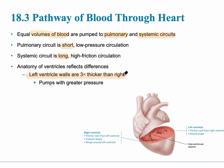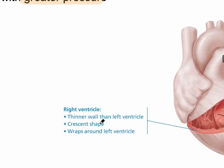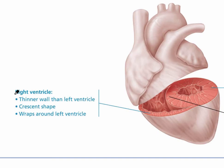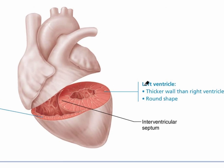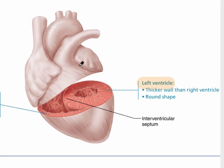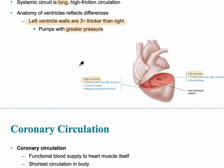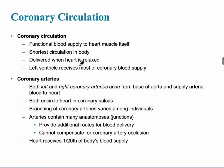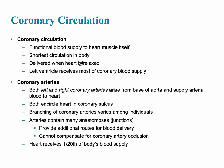The left ventricular wall generates much greater pressure. On the right side, in the right ventricle, the pressure is only about 20 millimeters of mercury, which is significantly less than the left side where pressure is at least 120 millimeters of mercury. We've talked about pulmonary circulation and systemic circulation; we haven't yet talked about coronary circulation, which includes the coronary blood vessels.